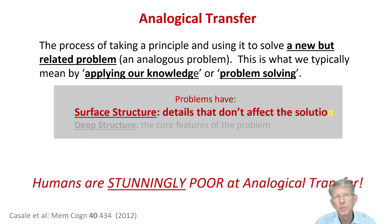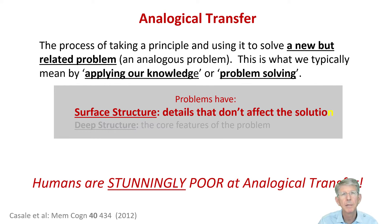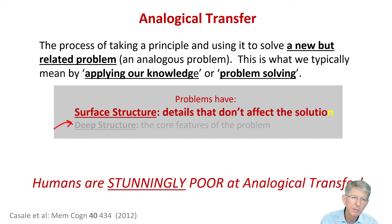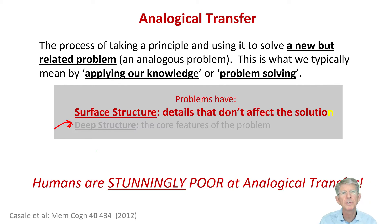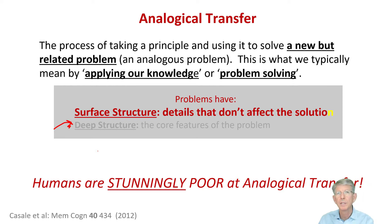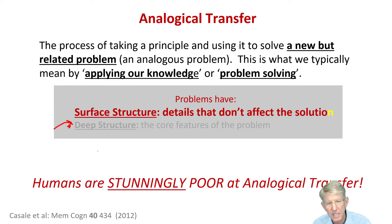It turns out that problems — almost all problems — have two types of structure. The surface structure, which are details that don't affect the solution whatsoever, and then what's called deep structure — that's the core feature of the problem. You'll see here on the slide I've undercolored deep structure; I've made it so it's hard to see, because it is. Most people do not see that. What most people see are the surface structure aspects of the problem, and they use those aspects to try and transfer and solve a new problem, but they're irrelevant, and so it doesn't work. Deep structure is hard to see — most people miss that.